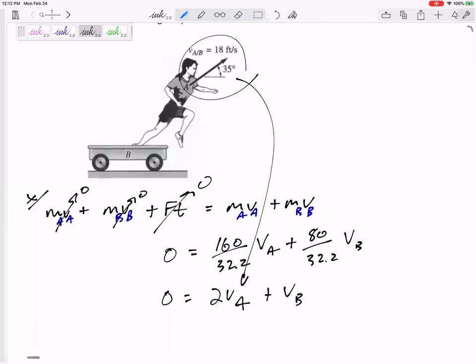But I cannot plug in - remind myself this is only x, x, x - this is the x velocity. I cannot just plug in 18 cosine 35 as my velocity of a because that's not the real velocity of a.